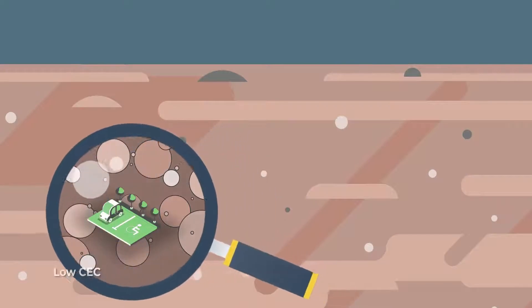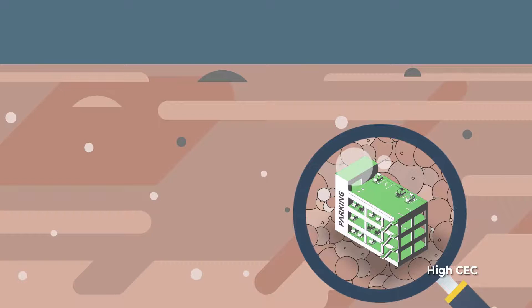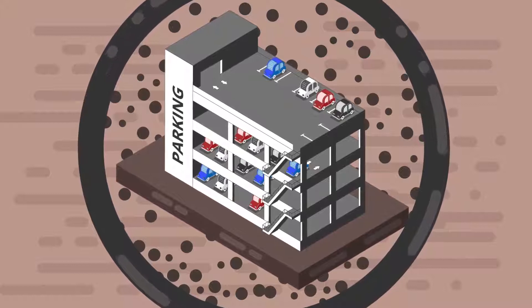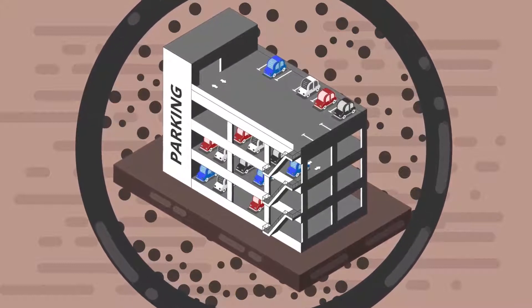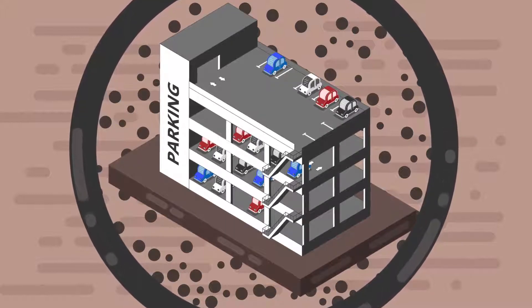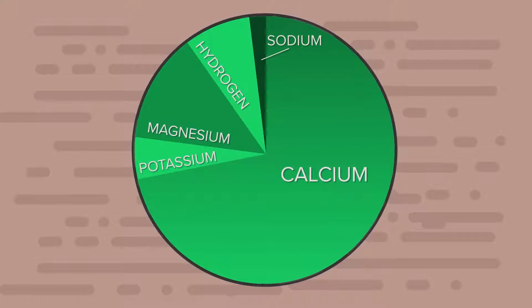There is a direct connection between CEC and percent base saturation. We thought of CEC as a parking lot — a low CEC soil had very few parking spots, where a high CEC soil had many parking spots. Tying that into percent base saturation, we're looking at who's actually parked in those spots. Like cars, we're looking at how many red cars there are relative to white or blue cars. In the soil, we want to know what percentage of potassium, calcium, hydrogen, sodium, or magnesium are in those parking spots.